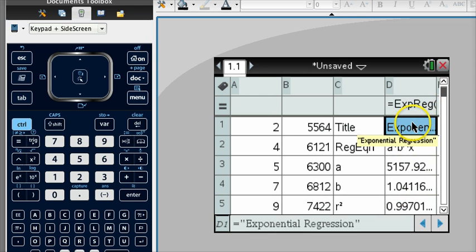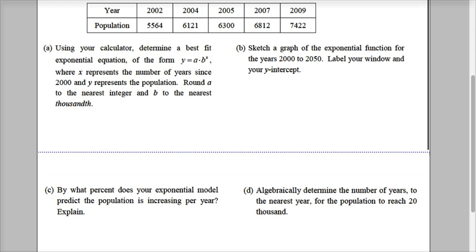Notice here, it tells you exponential regression. This is the form that they asked me for. And remember, they said round it to the nearest 1,000. Okay, so that's three decimal places.